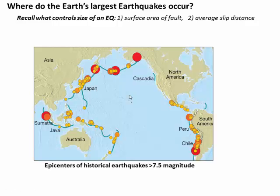If we look at where earth's largest earthquakes occur, you can see that they are generally along subduction zones. This is the ring of fire that we identified in a previous lecture on volcanoes — it's also the ring of large earthquakes, following these subduction zones around the edge of the Pacific.